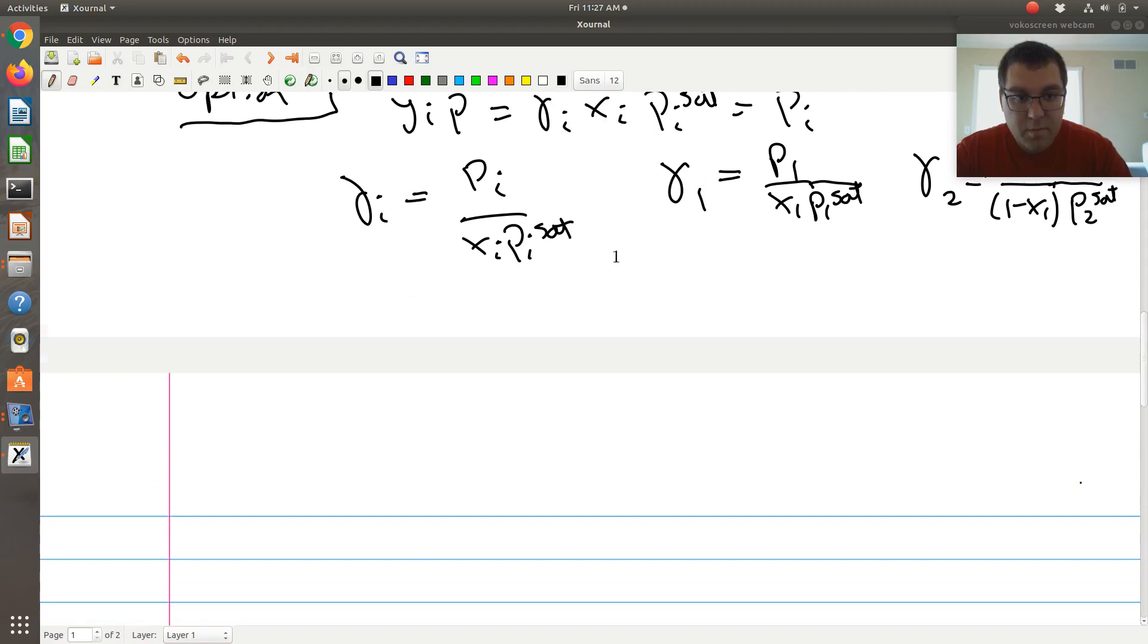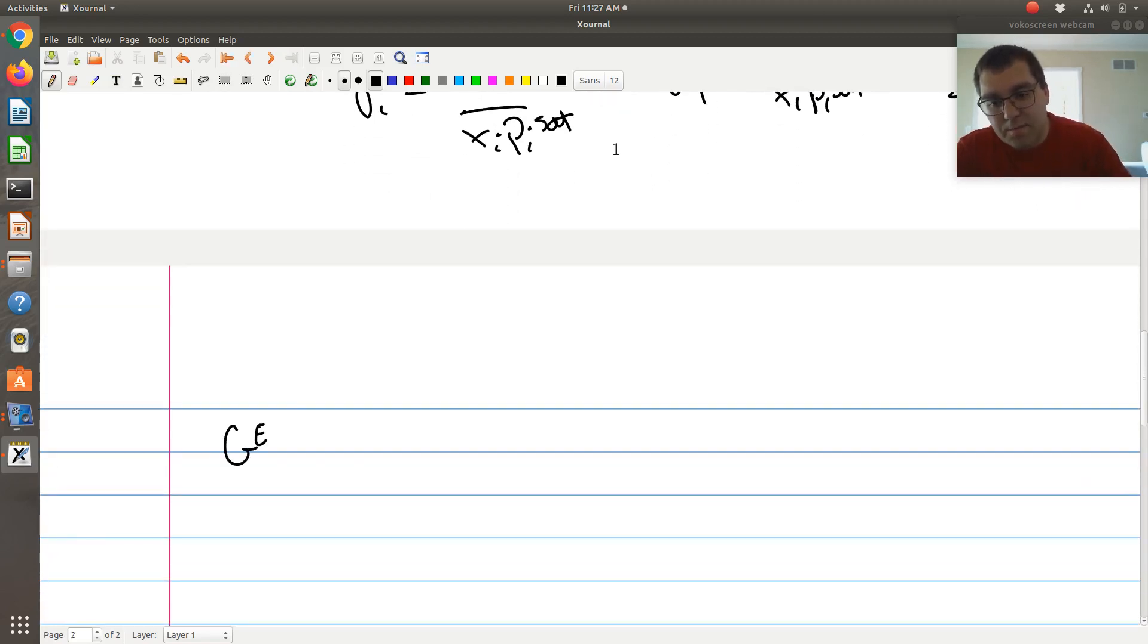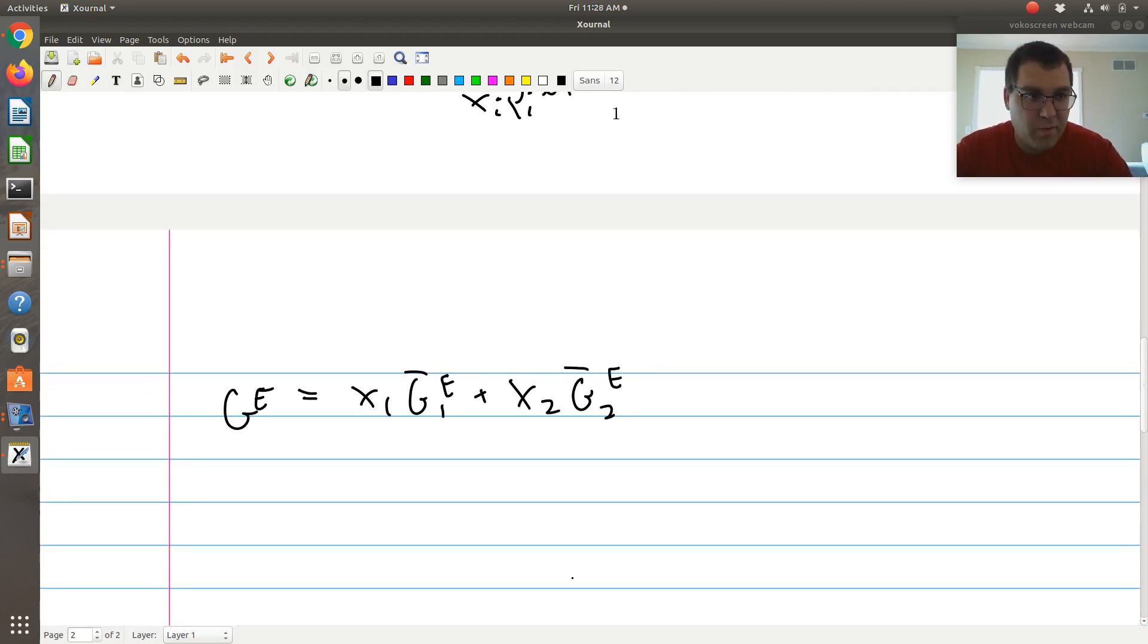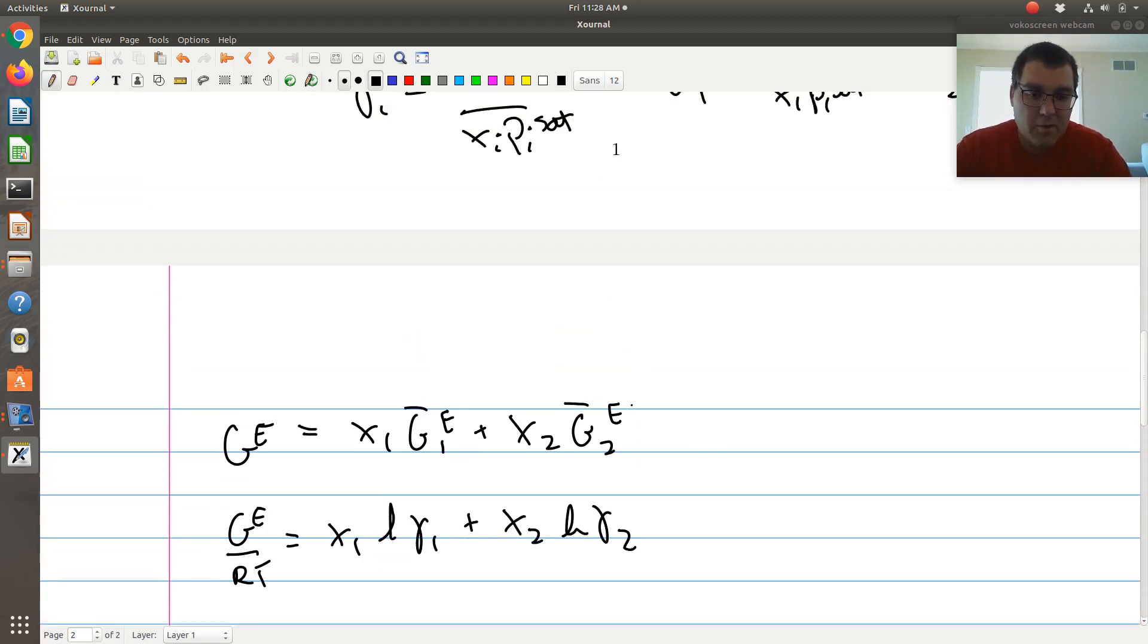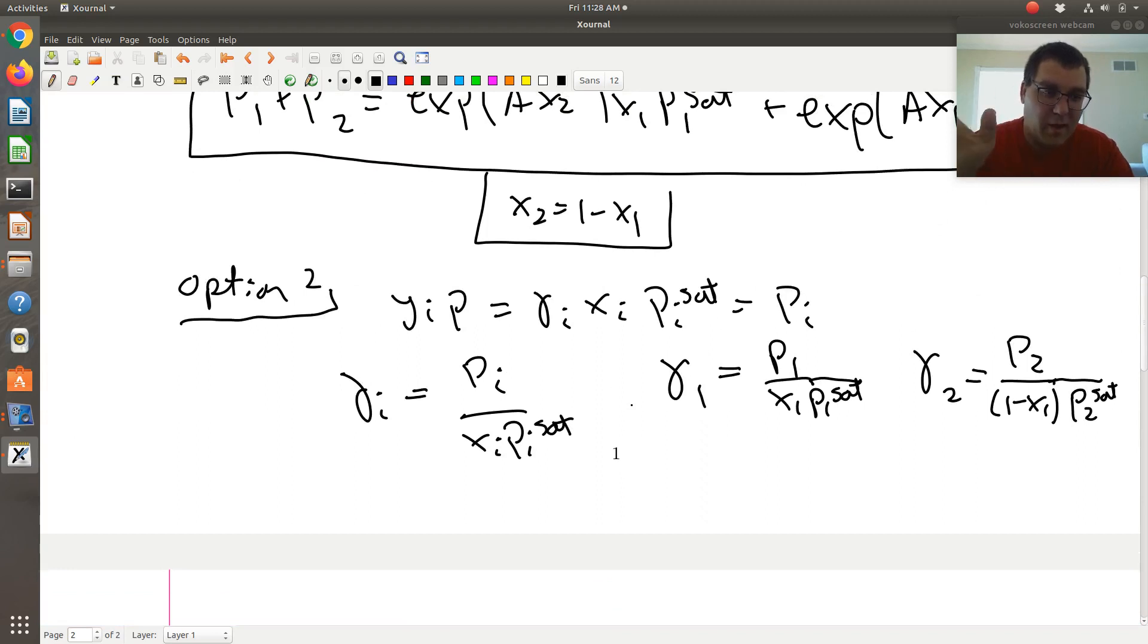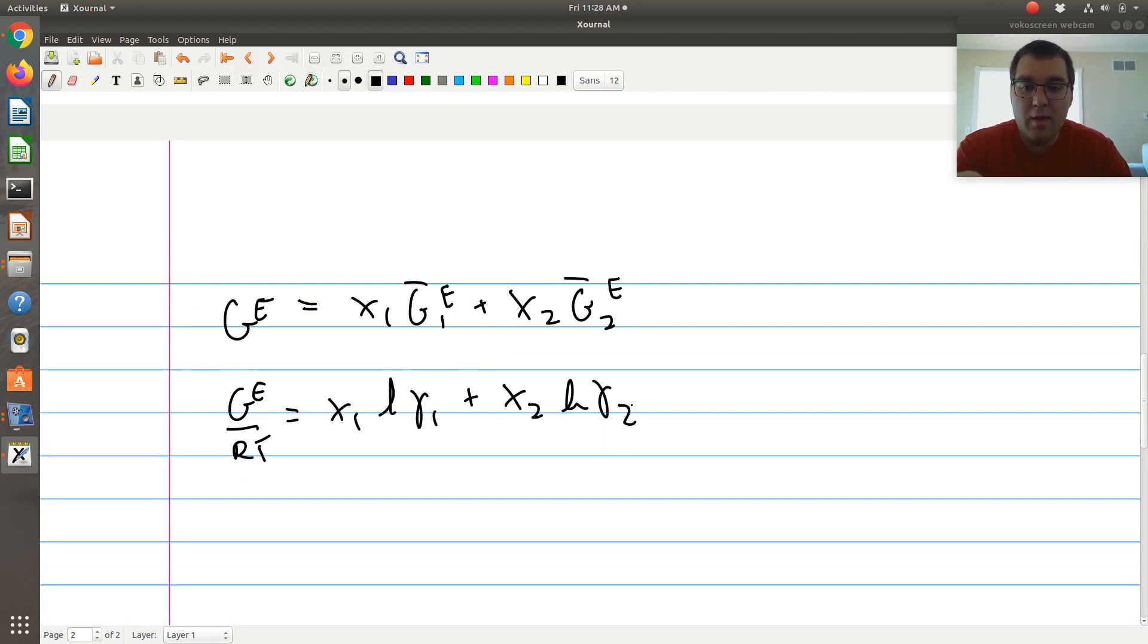And then once I have the two of those, I know that GE over RT would be equal to X1 G bar 1 excess, plus X2 G bar 2 excess. I could divide through by RT to get it in its dimensionless form. Or equivalently, GE over RT then would be X1 log gamma 1 plus X2 log gamma 2. Where I just solved for gamma 1 and gamma 2, I can get a number from the provided information. GE over RT, that's going to be equal to my A, X1, X2.